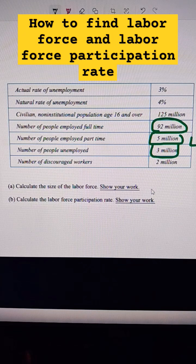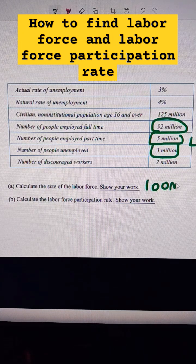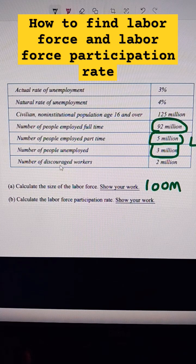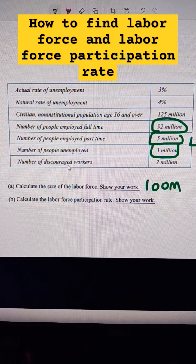The labor force in this case would be 100 million — just add the workers who are working and the workers who want to work. We don't include the discouraged workers because they're choosing not to look for work, even though they're unemployed.